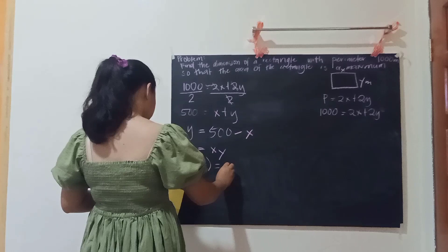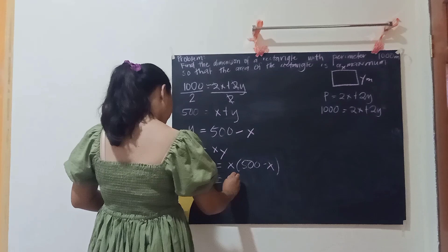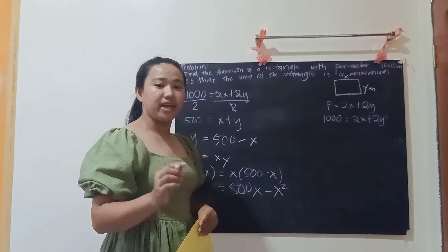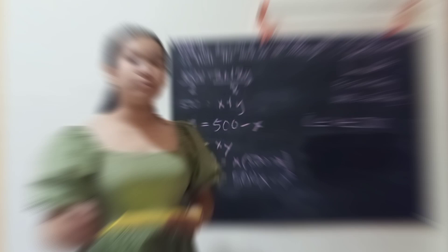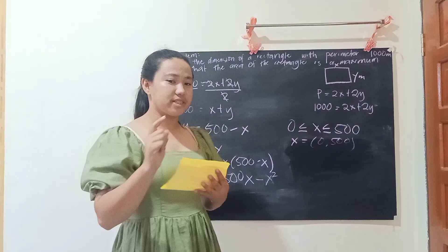So we have A(x) equals 500x minus x squared. Because x and y are lengths, we must have x between 0 and 500. The problem reduces to finding the value of x in (0, 500) for which A is a maximum. Since A is differentiable, the maximum must occur at an endpoint or a stationary point.